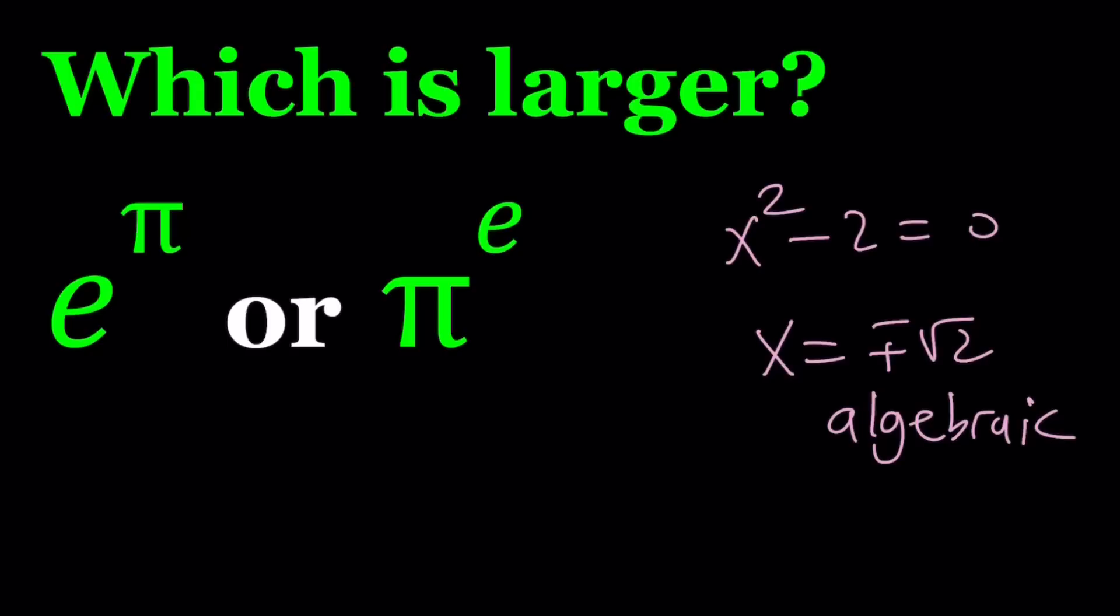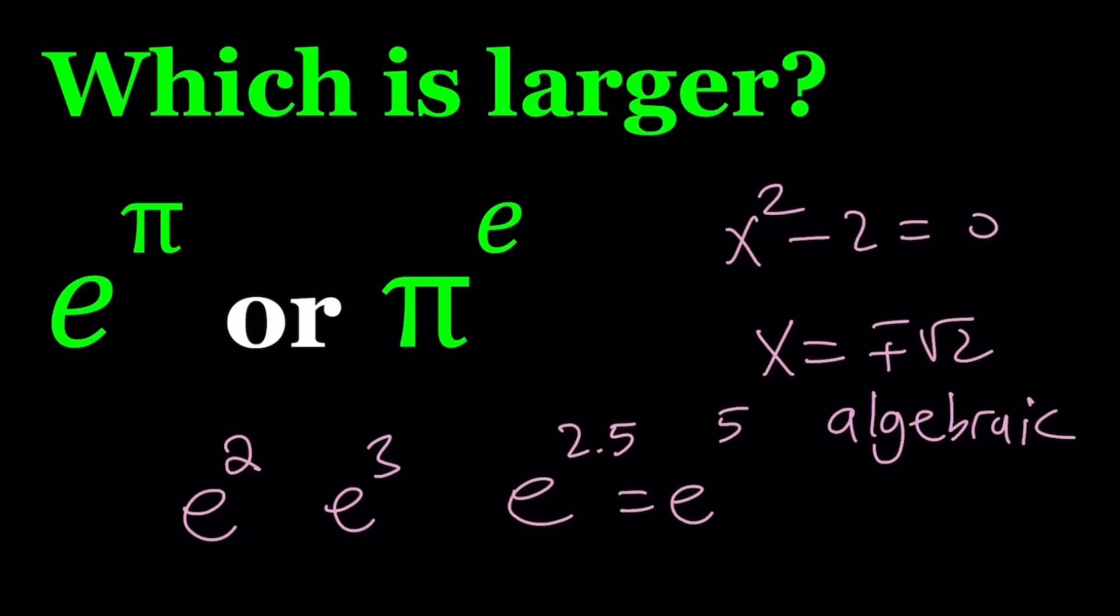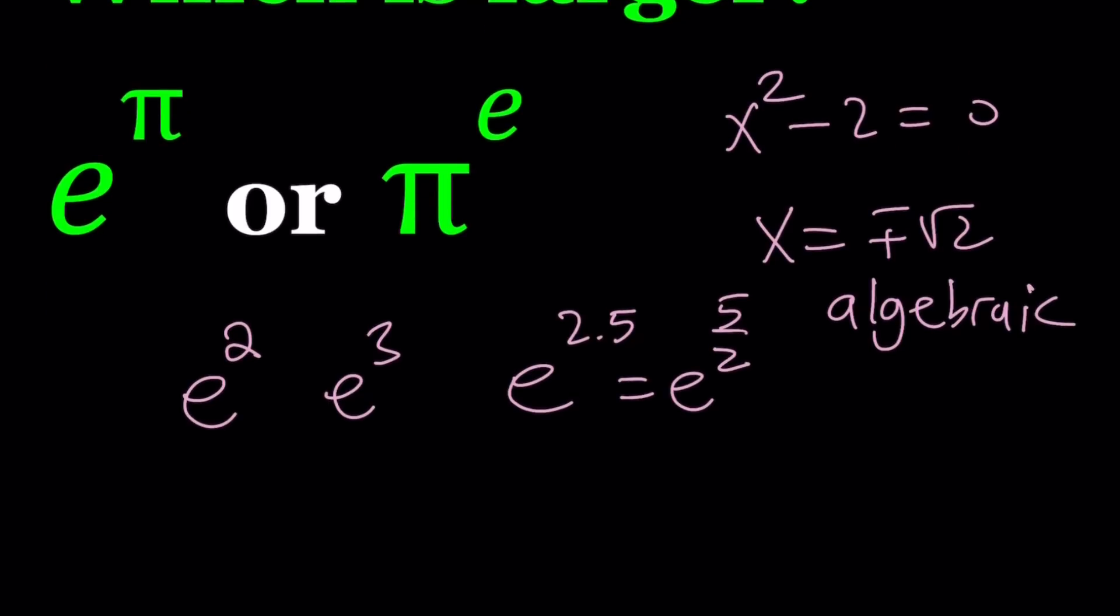Obviously, we can define e to the power 2, e to the power 3, we could also define e to the power 2.5 or e to the power 5 halves. This can be defined as the square root of e to the fifth, and so on and so forth.